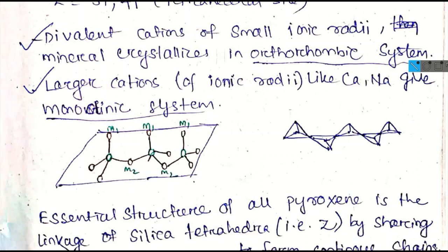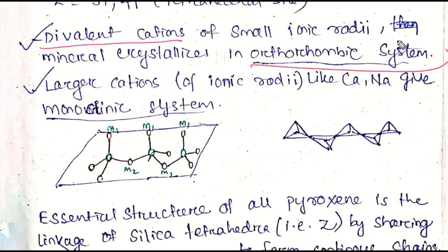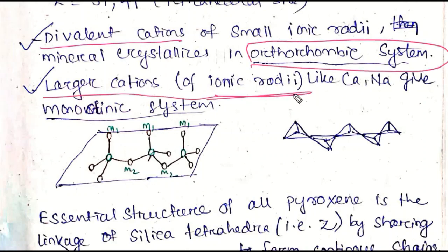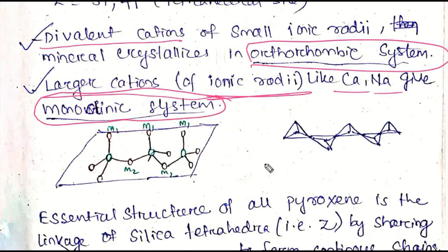Pyroxenes crystallize in two types of systems. When divalent cations are present, they crystallize in the orthorhombic system. When larger cations with higher ionic radii are present, such as Ca and Na, they crystallize in the monoclinic system.